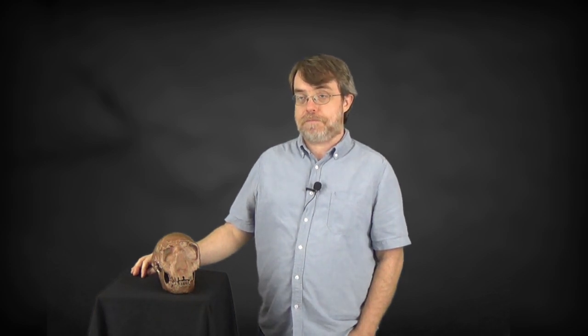So what do these differences mean for our creationist understanding of Nariokotome boy? Well, actually, the differences in the skull are the most divergent from modern people. If you look below the neck, Nariokotome boy's skeleton is extremely similar, mostly to modern Homo sapiens. Not exactly, but it's much closer below the neck than it is above the neck.